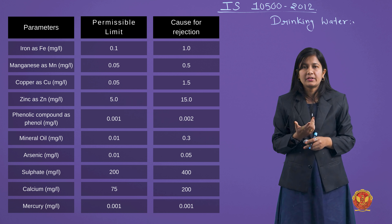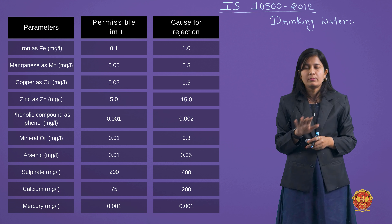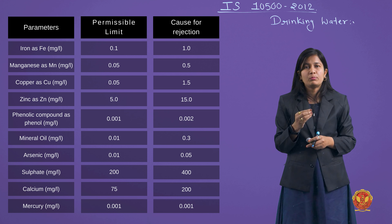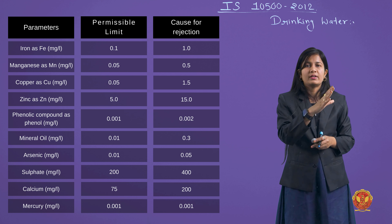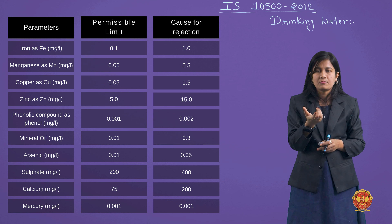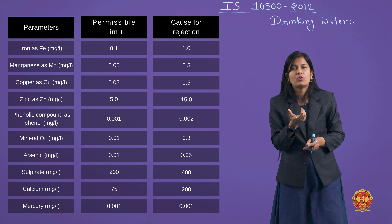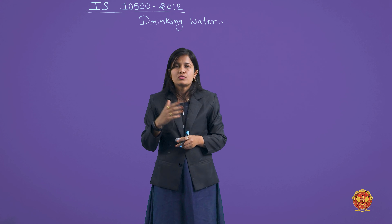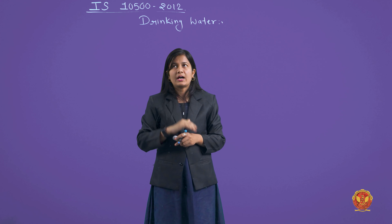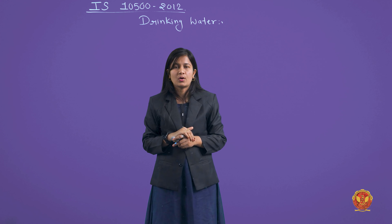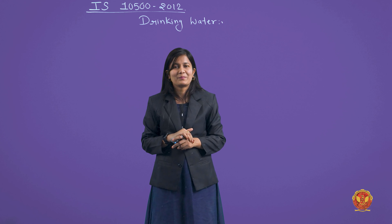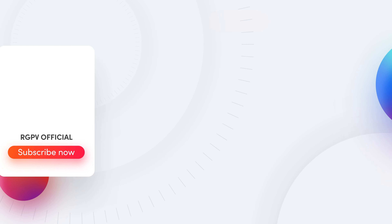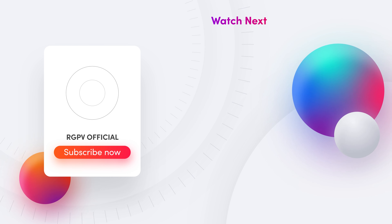Sulfate की permissible limit 200 mg/L, cause of rejection 400 mg/L। Mercury एक toxic substance है — बिल्कुल भी available नहीं होना चाहिए, but permissible limit 0.001 mg/L, cause of rejection भी 0.001 mg/L है — इससे समझ सकते हैं कितना कम है। Toxic substance को पानी में avoid करते हैं। So these are some limits according to IS-10500-2012 जो competitive exam के point of view से mind में रखना है। Thank you।